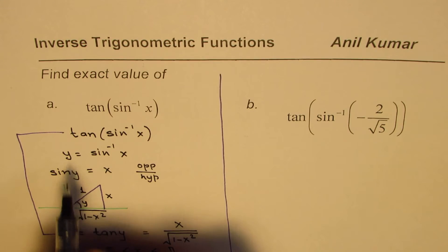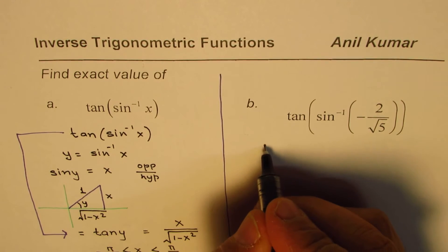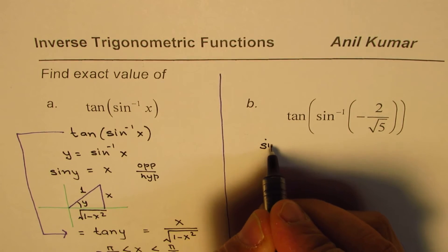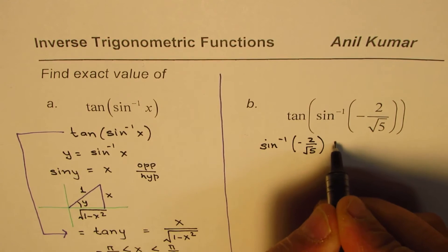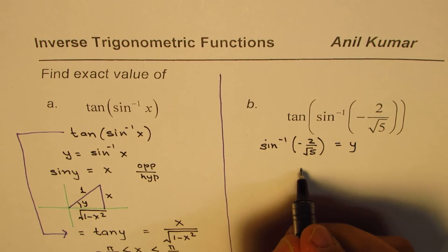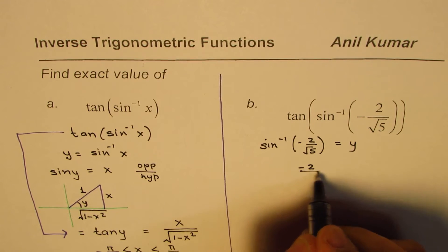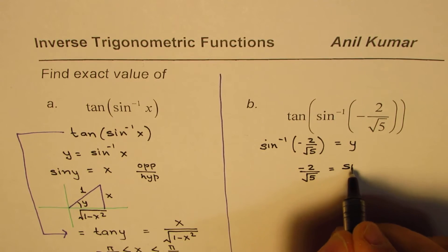As we did last time, we'll say let sine inverse of -2 over square root 5 equals to y. So in that case -2 over square root 5 will be equals to sine y.